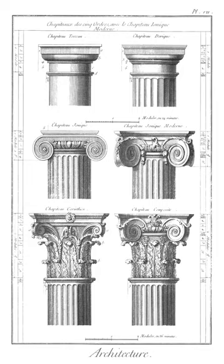Dromos: entrance passage or avenue leading to a building, tomb, or passageway. Those leading to beehive tombs are enclosed between stone walls and sometimes infilled between successive uses of the tomb. In ancient Egypt the dromos was a straight, paved avenue flanked by sphinxes.